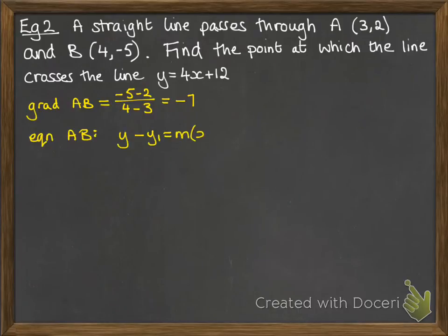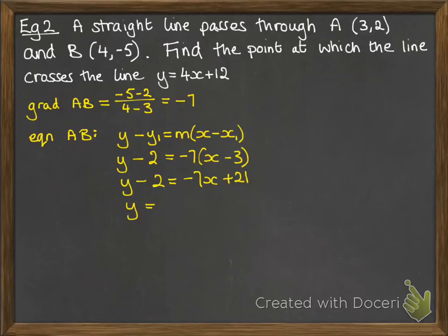Now we can work out the equation of that line AB, substituting in those values we just worked out and one of the coordinates. It can be either A or B, it doesn't matter. Simplify that. We get the equation of that line as y equals minus 7x plus 23.